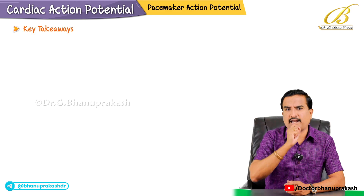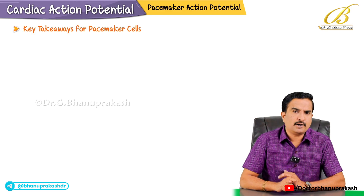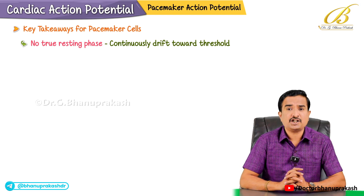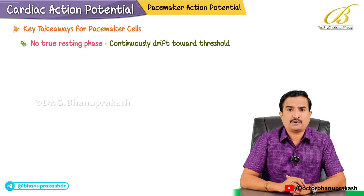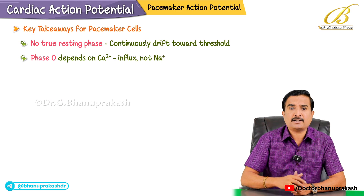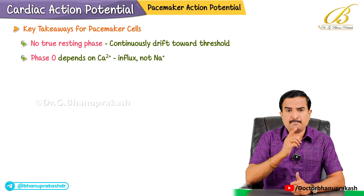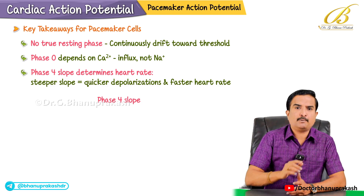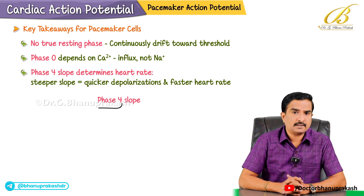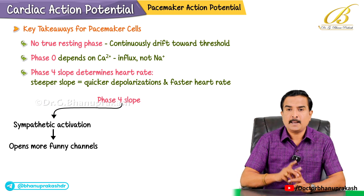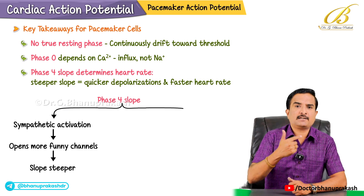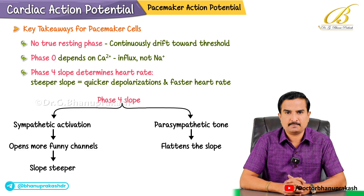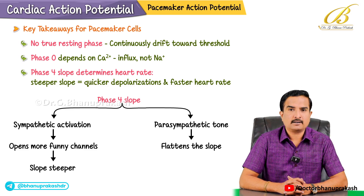A few key takeaways for pacemaker cells: they have no true resting phase because it is highly unstable - instead they continually drift towards the threshold. Phase 0, the upstroke, depends on calcium influx, not sodium. The rate of the drift in phase 4 determines the heart rate - the steeper the slope, the quicker the depolarization and the faster the heart rate. Sympathetic activation opens more funny channels, making the slope steeper, whereas parasympathetic tone flattens it. This is how the autonomic nervous system affects heart rate.